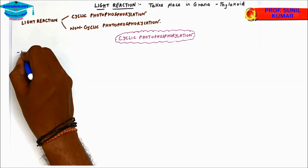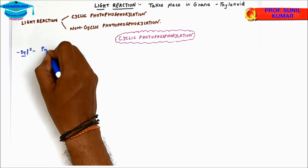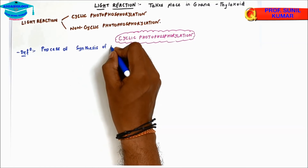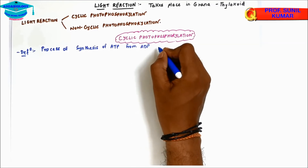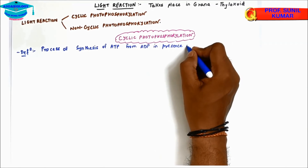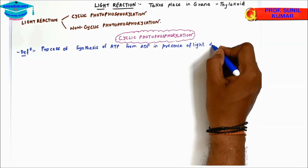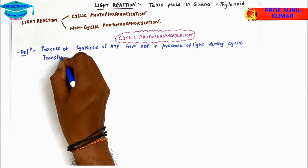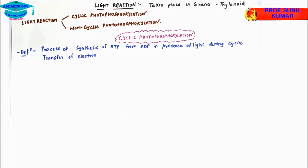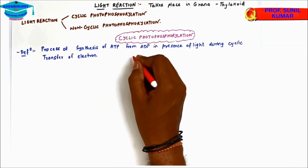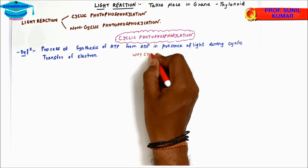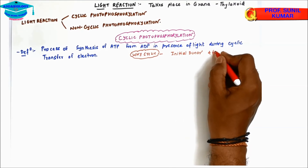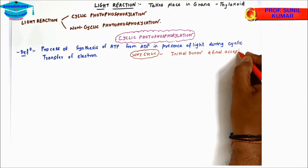Cyclic photophosphorylation is defined as the process of synthesis of ATP from ADP in the presence of light during the cyclic transfer of electrons. The electrons are transferred in a cyclic manner and come back to the source from where they were liberated. It is called cyclic because the initial donor and the final acceptor of the electron are the same.